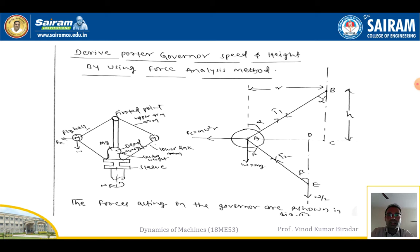The Porter Governor diagram consists of two balls of equal and same weight on either side of the shaft. A central shaft is connected and fixed at the top, and connected with the engine shaft at the lower end. In between, we add a dead weight. The dead weight W equals Mg. On the right-hand side I am going to draw the free body diagram of half of the governor.